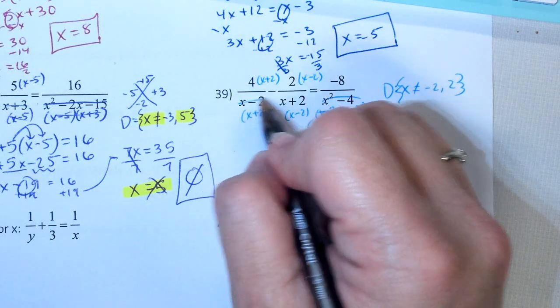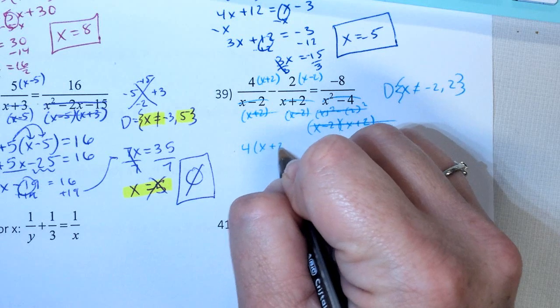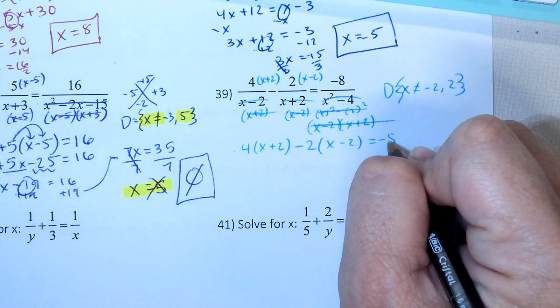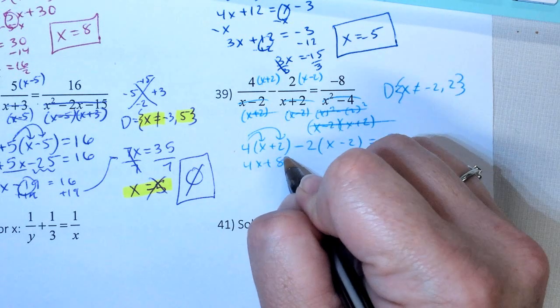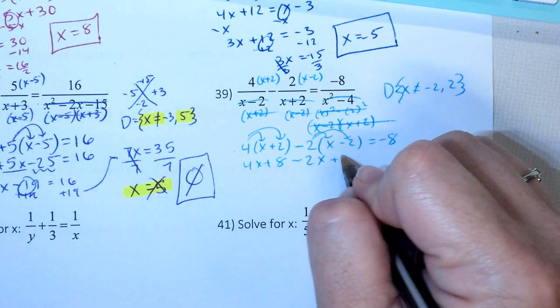So knowing that, cross off my domain, and I have 4 times x plus 2 minus 2 times x minus 2 equals negative 8. So 4x plus 8 minus 2x. 2 negative makes it positive 4.